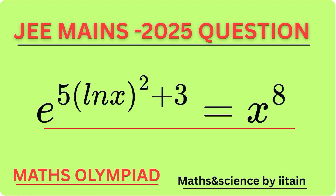The question is: we have to find the product of all the solutions available for this equation — e to the power of (5·ln(x))² + 3 is equal to x to the power of 8. This is the equation we have to solve and find the product of the roots.